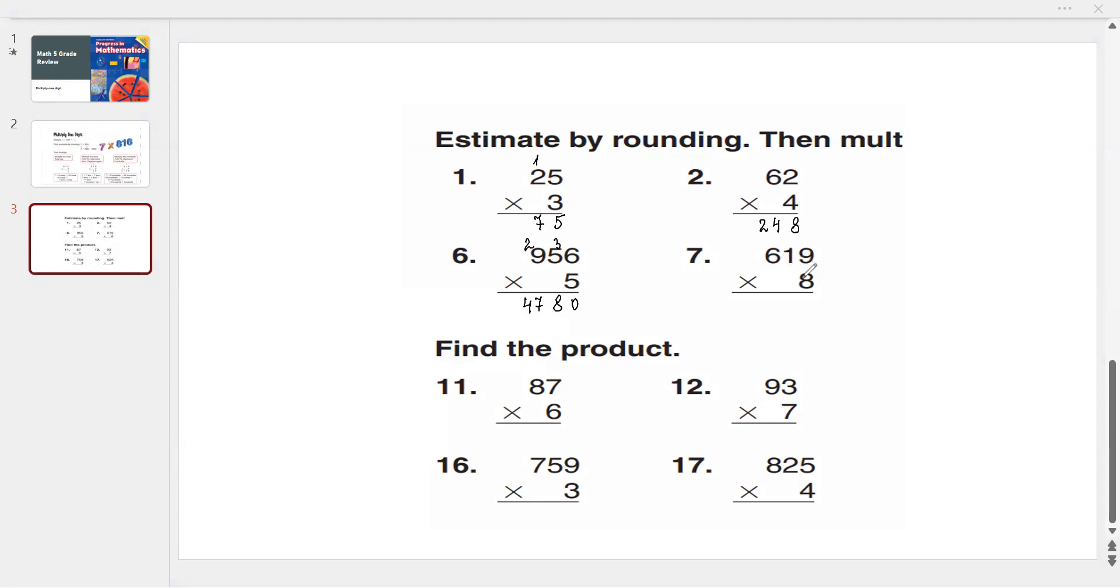619 multiplied by 8. 8 times 9 is 72: write 2, 7 goes up. Then 8 times 1 is 8, plus 7 is 15: write 5, 1 goes up. 8 times 6 is 48, plus 1 is 49. Very easy.